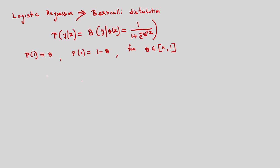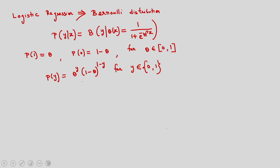The Bernoulli distribution is defined as: P(1) = θ and P(0) = 1 − θ. Equivalently, P(Y) = θ^y (1−θ)^{1−y} for Y with two values 0 and 1, since we have only binary outcomes. That is the concept of logistic regression using the Bernoulli distribution.